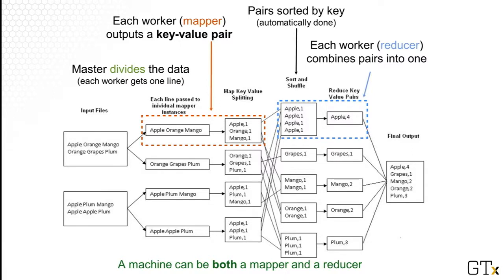Each mapper does a very simple thing, which is to turn each word that it sees into a key-value pair. For example, when it sees 'apple', the mapper outputs 'apple, one', where apple is the key and one is the value. Now you know why the worker is called a mapper — it maps an input, which is a single word such as 'apple', into an output that is a key-value pair.